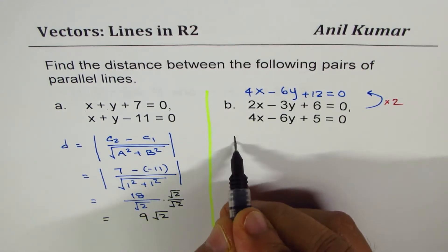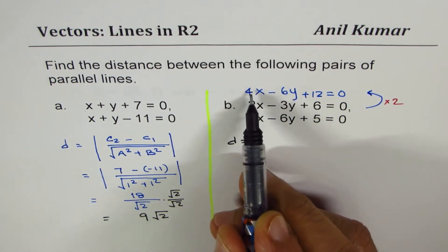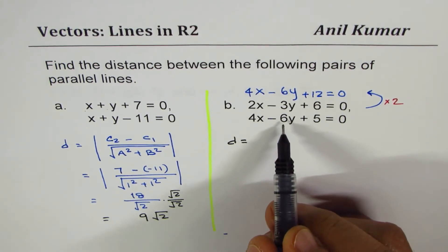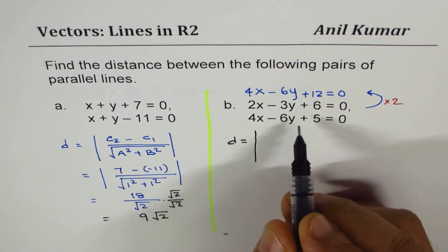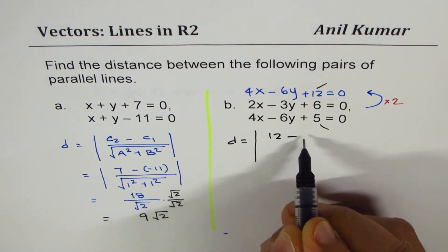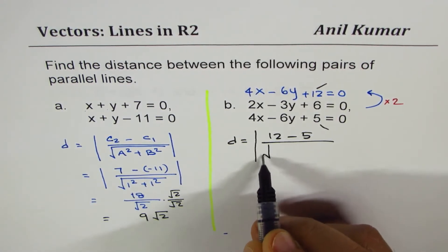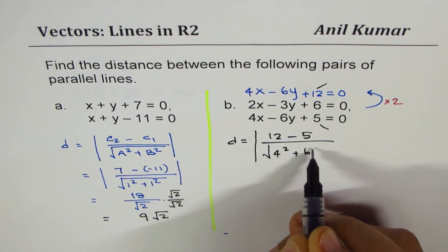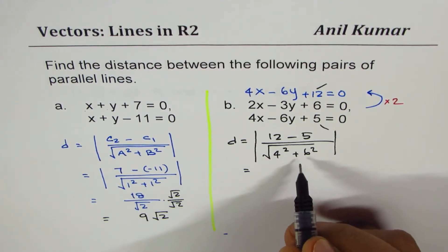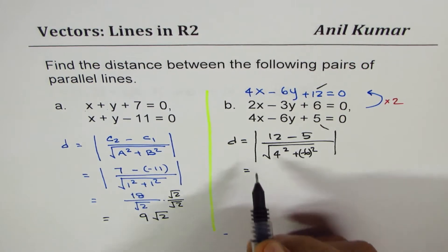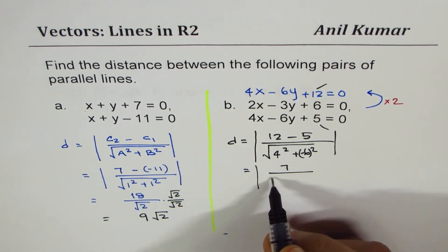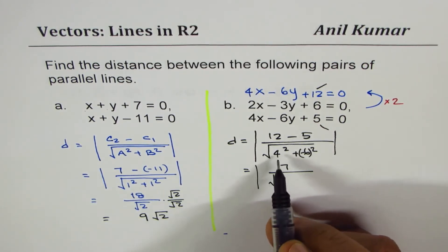Since they are parallel, I can apply the same formula. It's important to write both equations with the same a and b values — that's a key step. So now c1 and c2 will be these constant values: 12 and 5. We compute |12 - 5| divided by √(4² + (-6)²).